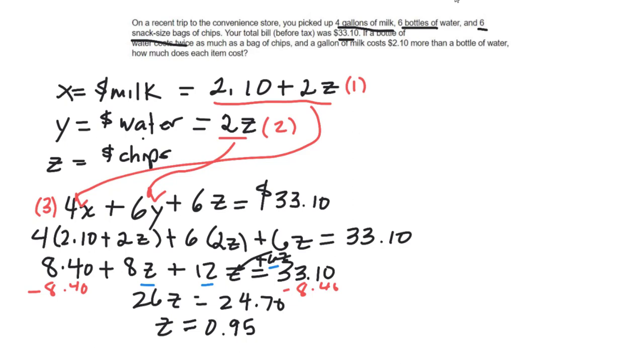We would hope a bag of chips isn't 95 dollars, right? So in other words, a bag of chips is 95 cents. So I have that one, my chips, 95 cents. I bet you can figure out how to get the price of water. Plug in what Z equals, and that would be $1.90. And then finally the same thing here, 2.10 plus 2 times my Z, and that would end up being $4. So $4 for milk, $1.90 for water, and 95 cents for chips.